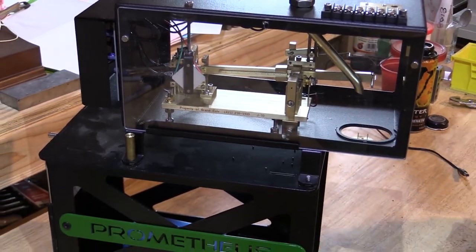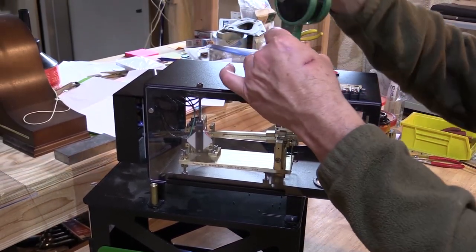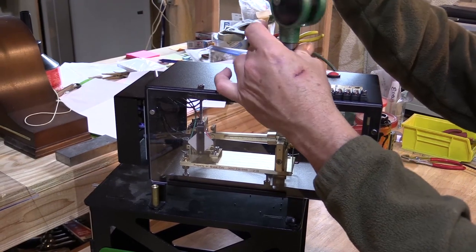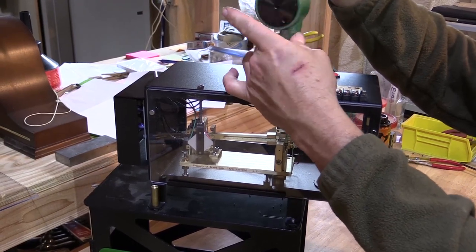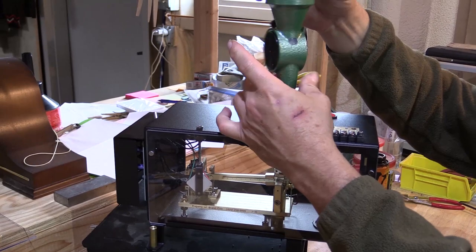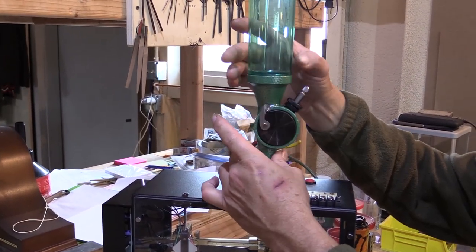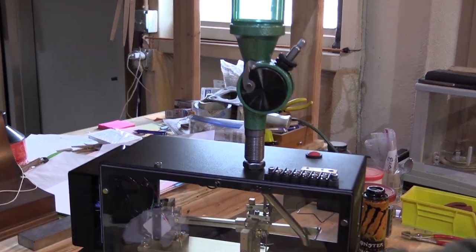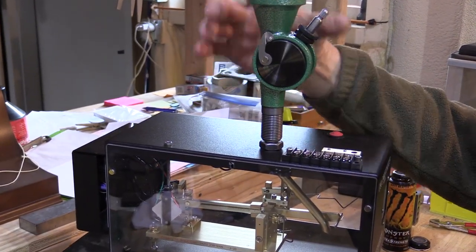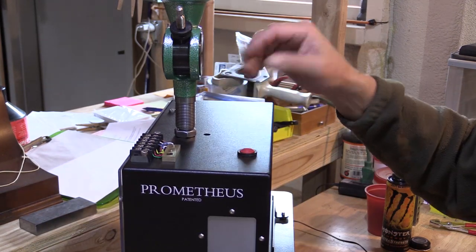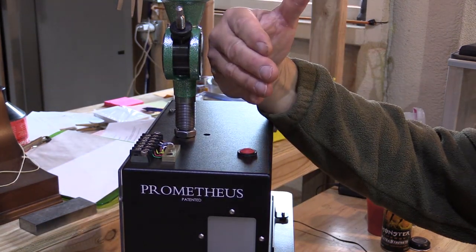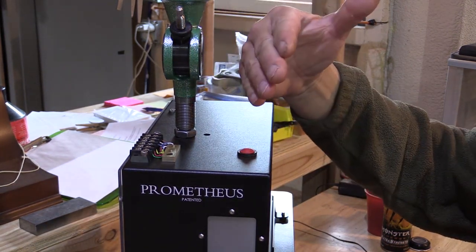Assembly. First step is to screw the powder measure on. These powder measures are all different and individually timed and tuned to each specific machine. Just screw it on until it bottoms out and gently snug it up. It will be pointing just a little bit to the right of straight dead ahead.